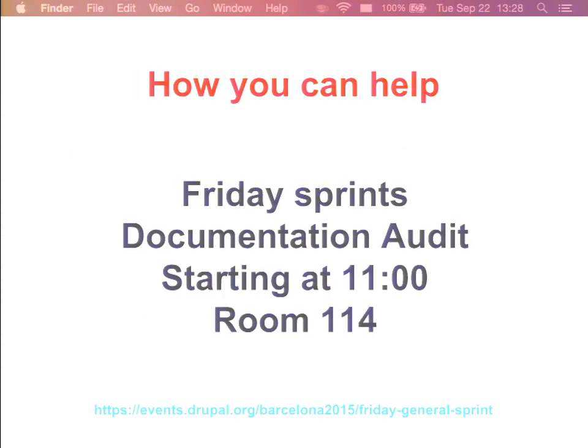Right now the team at the association is working through the actual implementation details for features needed to support the documentation section user stories. A huge part of the work will be content audit and migration — we have 12,000 documentation pages on Drupal.org and about four staff people who can work on this, so it will take a really long time. If you want to help, this Friday at sprints we will be doing an audit of the current documentation on Drupal.org, starting at 11 a.m. in room 114.